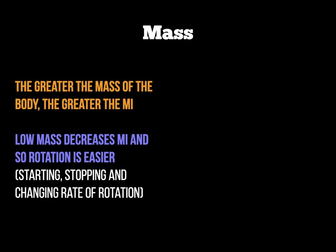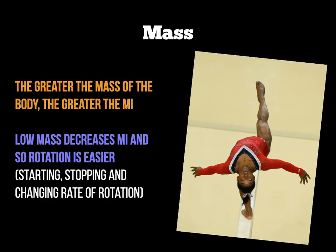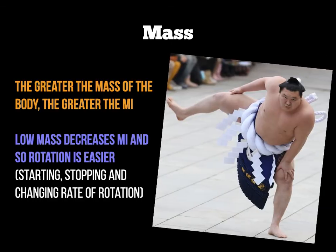Thinking about sports examples: a gymnast on the beam might try to have low body weight, because that reduces their MI, making it easier to rotate and perform somersaults, cartwheels, and arabesque springs. It takes less eccentric force to push that body around. In contrast, take a sumo wrestler — the heavier mass means it would be very difficult to rotate them, so the sumo wrestler has a high MI due to their much heavier mass.